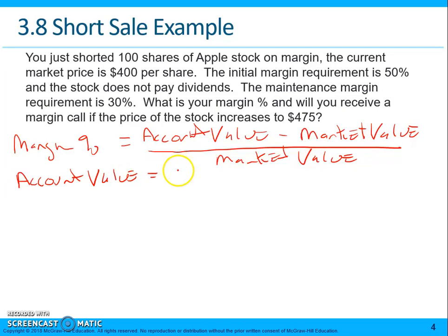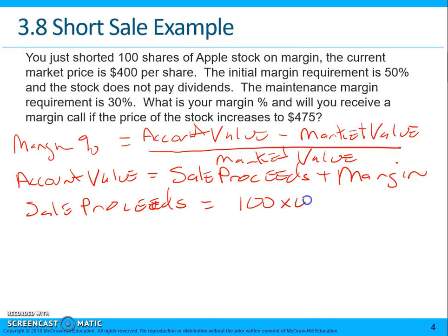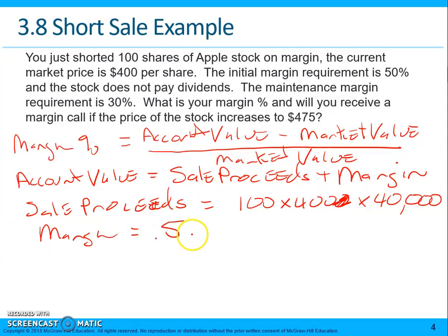The account value here is sale proceeds plus your margin. Sale proceeds are 100 times $400, which is $40,000. Margin is simply 0.5 times $40,000, which is $20,000. So you have $60,000 in your account.